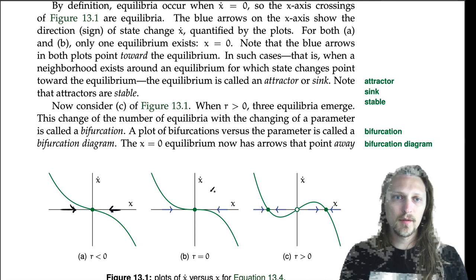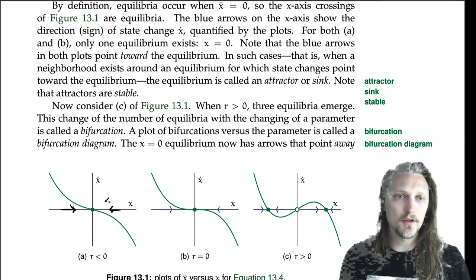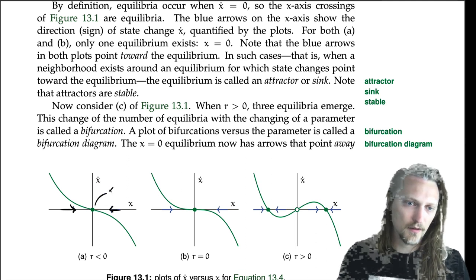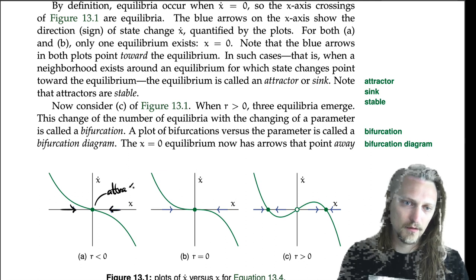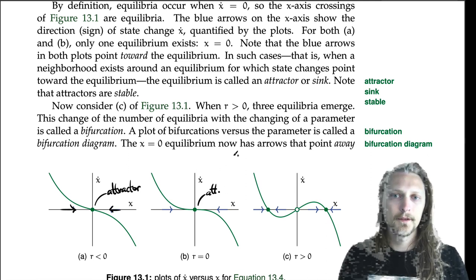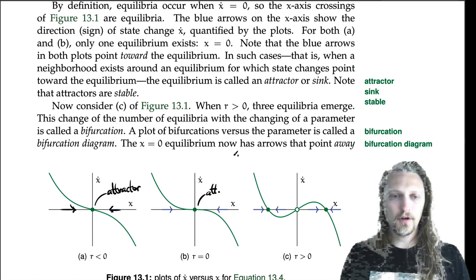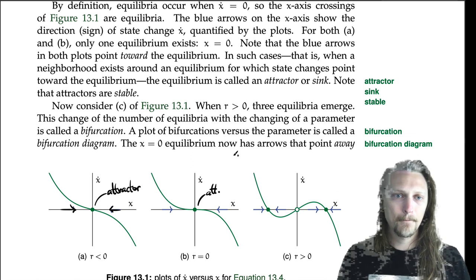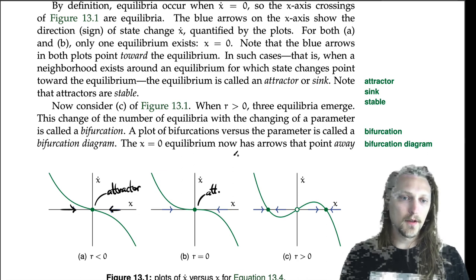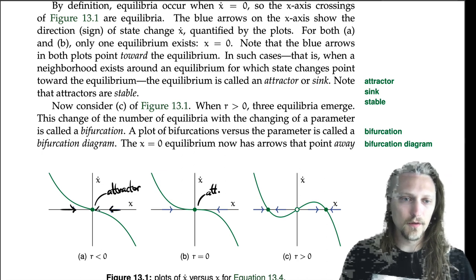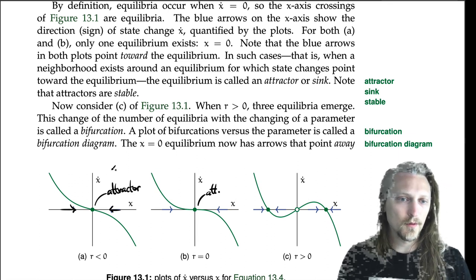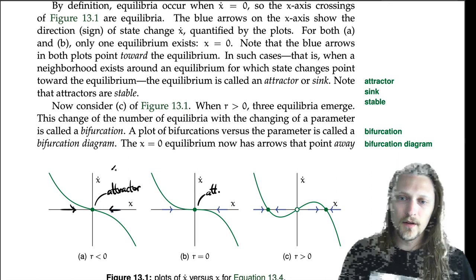In cases where a neighborhood exists around an equilibrium for which state changes point toward the equilibrium, the equilibrium is called an attractor or sink. You can think of it as attracting the state toward itself. Note that attractors are stable — if you start x in the neighborhood of the equilibrium, it will go to x-bar.